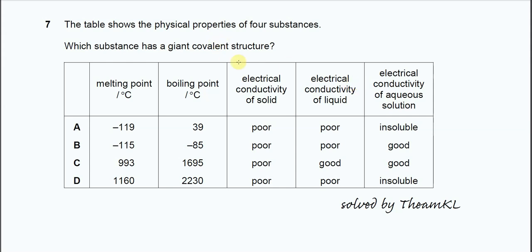Question 7. The table shows the physical properties of four substances. Which substance has a giant covalent structure?